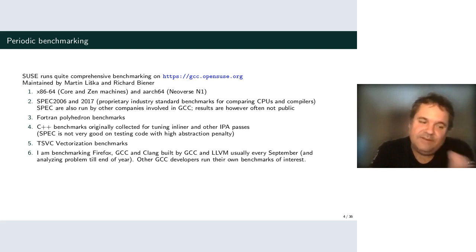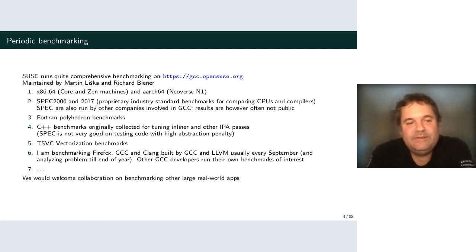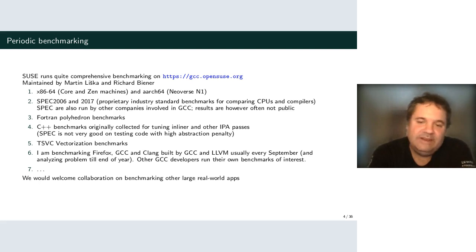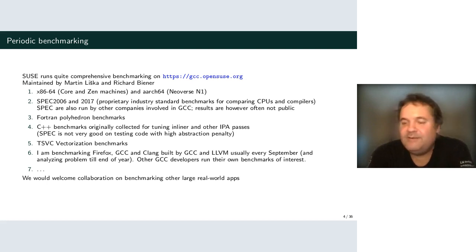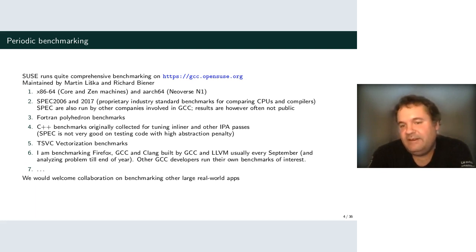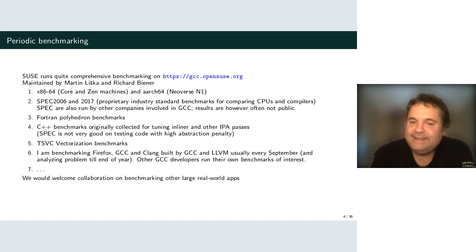A lot of GCC developers do their own testing. I benchmark Firefox and GCC compiled by GCC and LLVM every September, at the end of stage one development, to fix problems before release. I chose Firefox and Clang because they are centric on LLVM compilers, so it's easier to find GCC code generation issues — if Clang feels better it's easy to figure out why. It's very hard to find good compiler benchmarks — I tried LibreOffice, databases, Java runtimes, but these are hard to benchmark well.